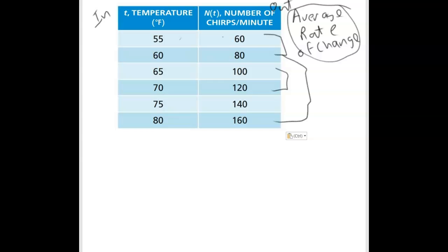Let me go through how to find average rate of change. We're going to find the average rate of change between these first two points, 55-60 and 60-80. Average rate of change is the change in the output divided by the change in the input. When we say change in, we mean subtract.